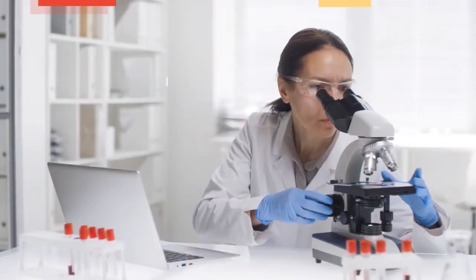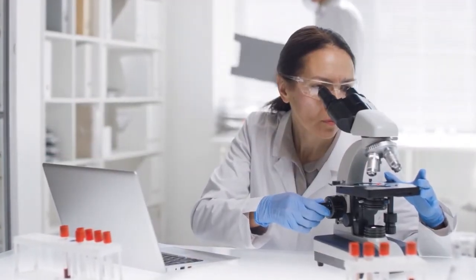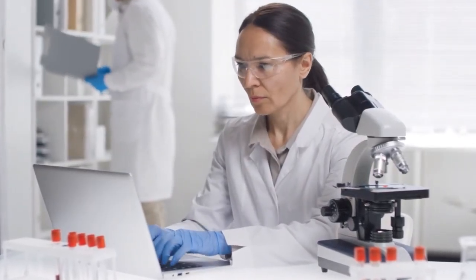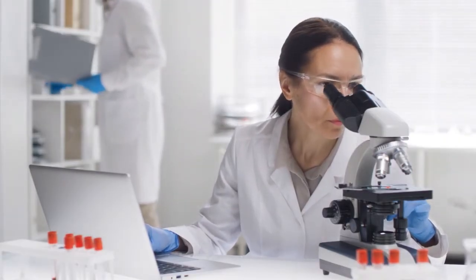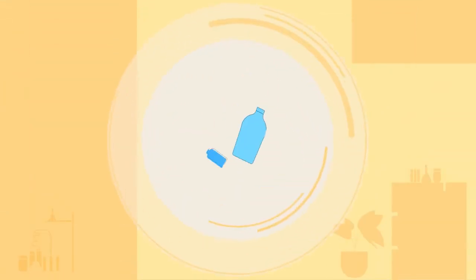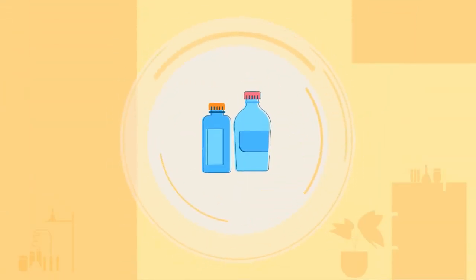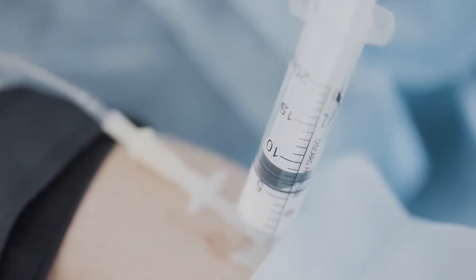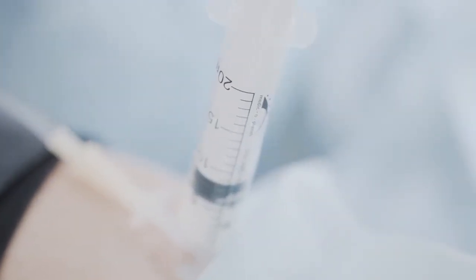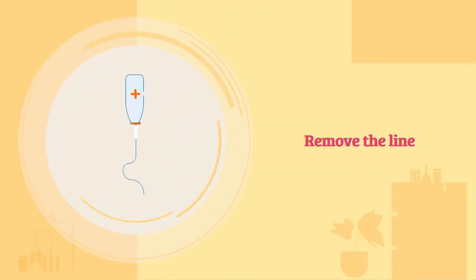Treatment typically involves blood cultures to identify the specific type of bacteria or fungi causing the infection. This information is crucial for selecting the most effective antibiotic treatment. Based on the blood culture results, intravenous antibiotics are administered to target the infection. The choice of antibiotics depends on the type of microorganism and its susceptibility to different drugs. In many cases, the infected central line needs to be removed to clear the infection completely.